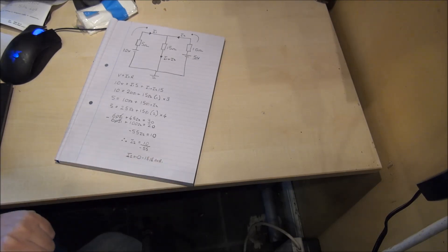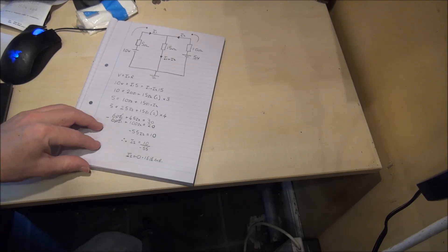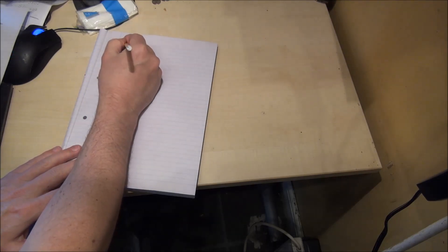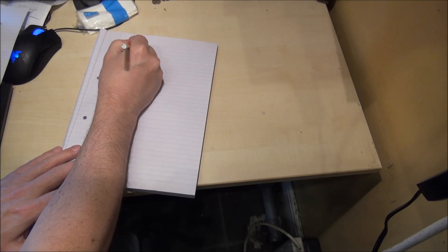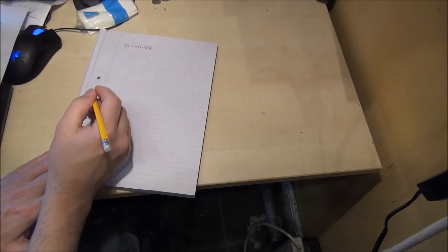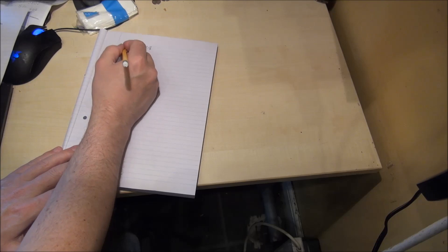We have worked out the current I2 and we can use that now to work out the current I1. We can take any of the two terms that contain I1 and I2 and use the value of I2 to determine the value of I1. I2 is equal to minus 0.1818 Amps. And we will take term 1 from our previous equation.